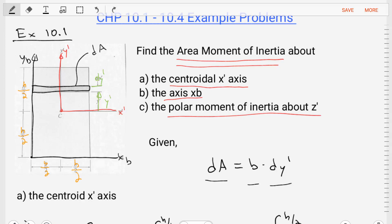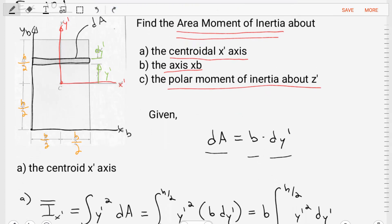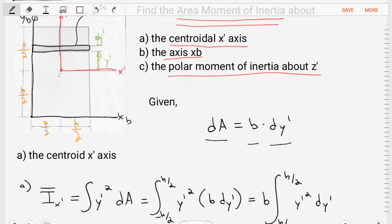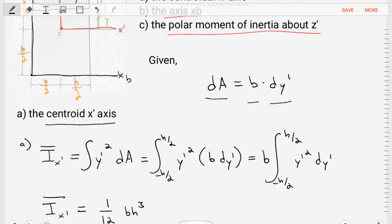So let's get started solving this problem. Let's start with part A, where we want to find the moment of inertia about the centroid in x' prime. In that case, since we are sitting at the centroid of this rectangle, we'll go ahead and directly use the integral for finding the moment of inertia about that x' prime axis. Where the integral is the integral of y' squared times dA.